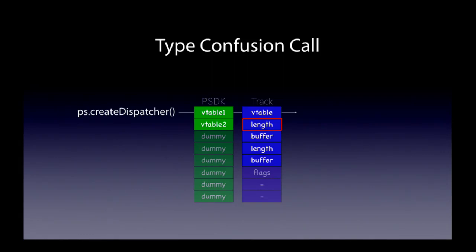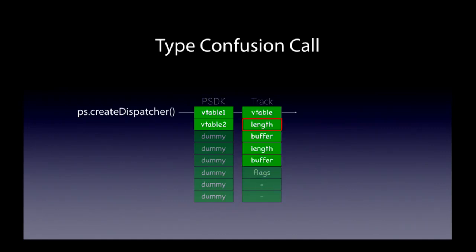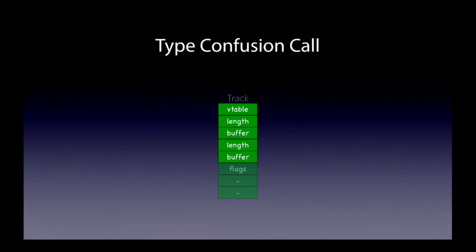The second double word of the current class memory happens to be the length field of the first string object inside Track. So simply initializing Track with a single-character string controls this field to be one. After decrement, the memory of Track will be released. Right now, we have a dangling pointer of type Track that was created by us. But we still need to find a way to occupy the memory of Track to control its content and release the class memory again.